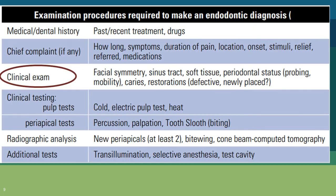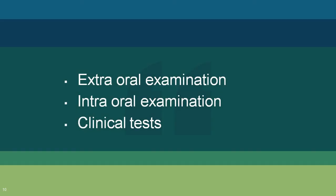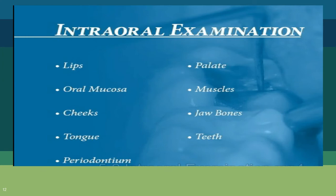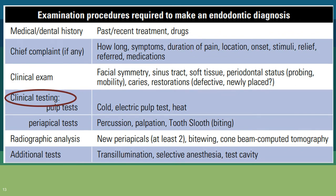The next important step is clinical examination. We always examine the patient first extra-orally: general appearance, gait, swellings, discoloration, redness, scars, sinus openings, and lymphadenopathy. Then intra-orally, we examine soft tissues — lips, oral mucosa, cheeks, tongue, periodontium, palate, and muscles — then jaw bones, and finally the teeth. We must not skip straight to the symptomatic tooth; a thorough examination is always necessary.